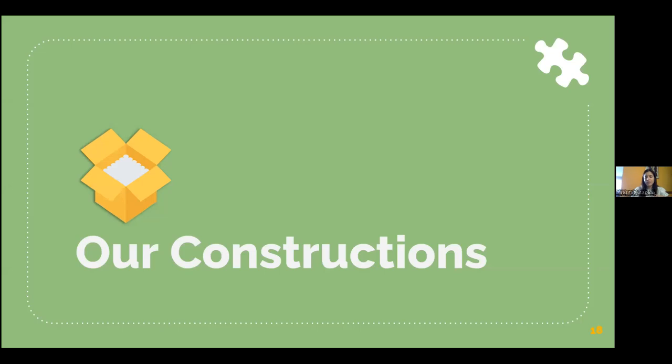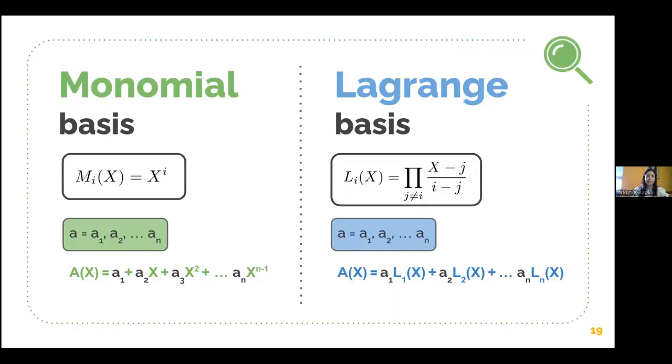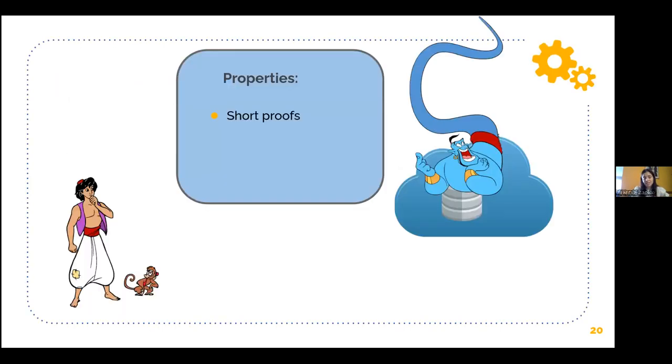This is cool because we have two constructions, one in the monomial and one in the Lagrange basis, both linear map vector commitments that have all the homomorphic properties that we defined before. As they are in the pairing-based setting, they have short proofs, fast verification, satisfy all the homomorphic properties and thus they are updatable and unbounded aggregatable.